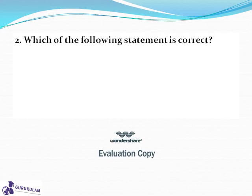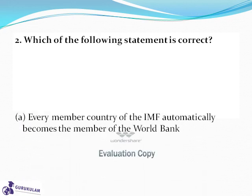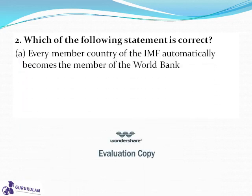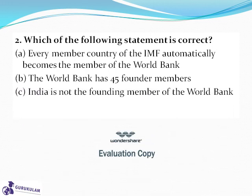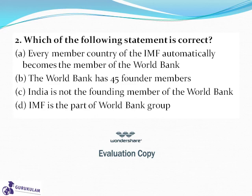Question 2: Which of the following statements is correct? Every member country of the IMF automatically becomes a member of the World Bank; the World Bank has 45 founder members; India is not the founding member of the World Bank; or IMF is part of the World Bank Group. The answer is A — every member country of IMF automatically becomes a member of the World Bank, and any country that quits the IMF is automatically expelled from World Bank membership.